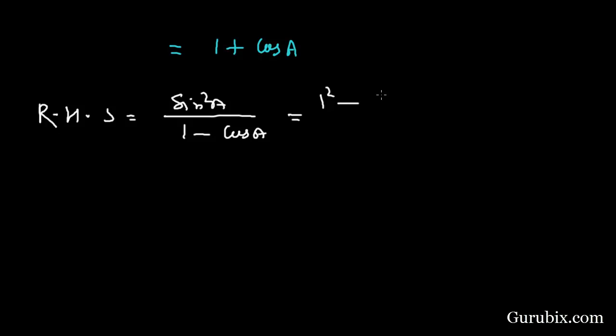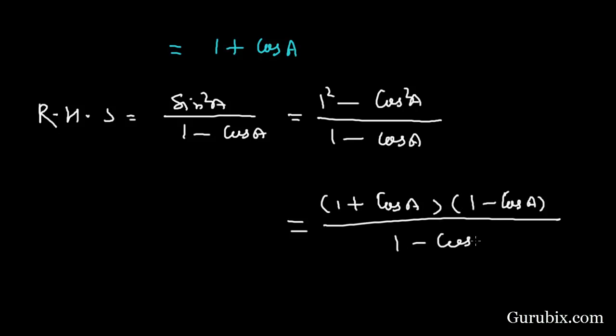...like this: (1² - cos² A). Here we have 1 - cos A. This value can be written as (1 + cos A) times (1 - cos A). Here we have 1 - cos A.